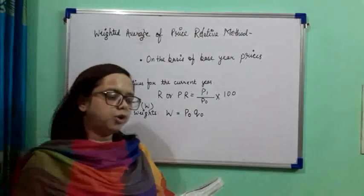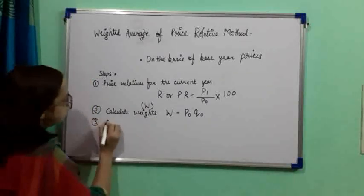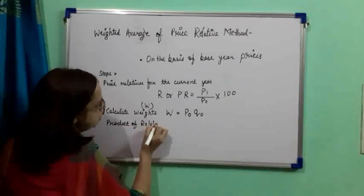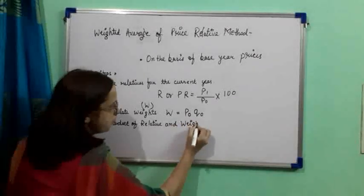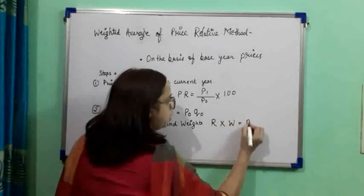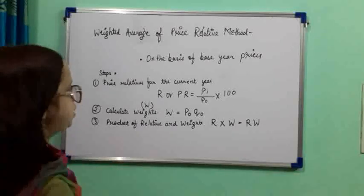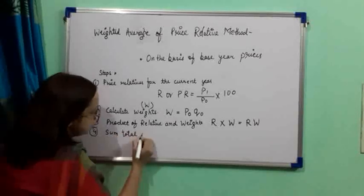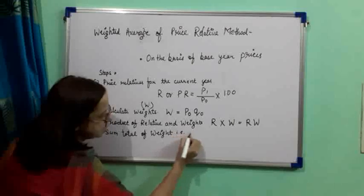Next, we find the product of weight W and price relative R, that is R × W. Once all the R and W values are calculated, we compute the summation of RW. Then we find the sum total of the weights, that is summation W.